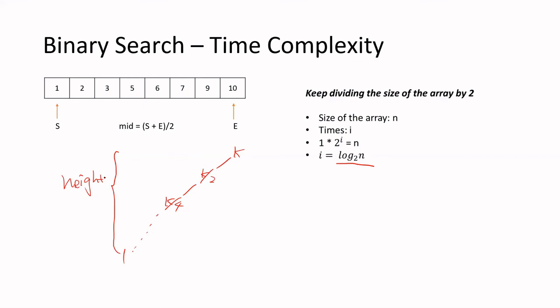Note that this log n complexity assumes the array is already sorted, but sorting definitely has its own cost that you need to factor in when evaluating whether binary search is worth the effort. In practice, we assume the data structure is already sorted. But if you're making a decision about which approach to use, you'll need to factor in that sorting cost.